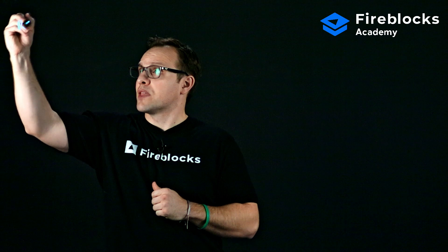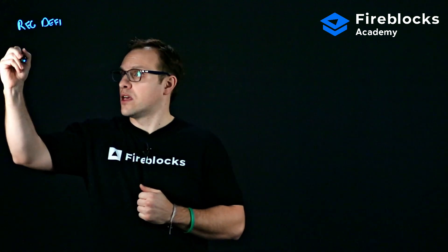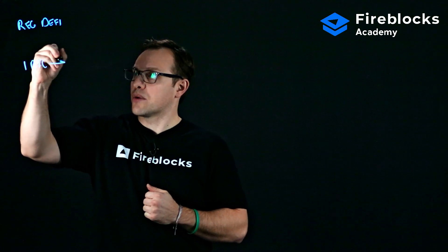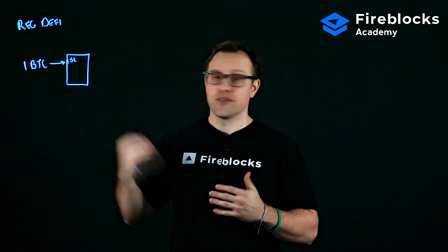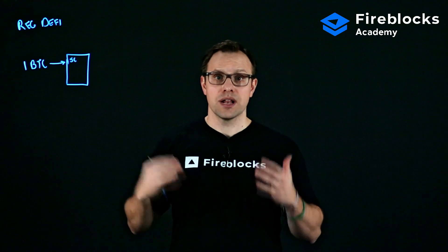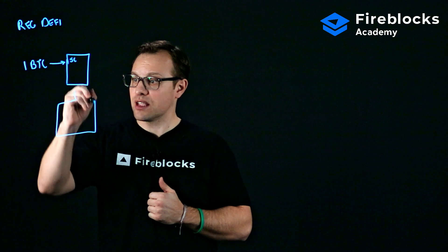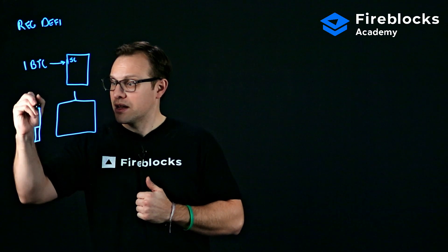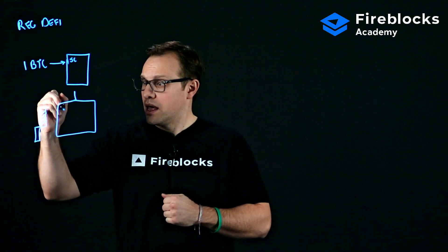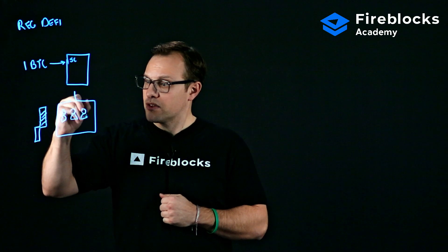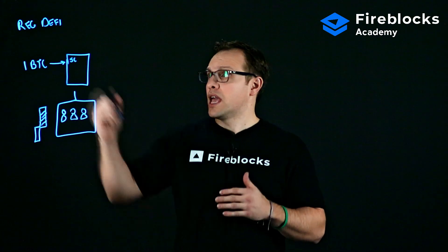For regular DeFi, let's say that I own one Bitcoin and I would like to earn some additional yield on that. I have my one Bitcoin and I want to go pledge this to a smart contract to earn that additional yield. The thing with regular DeFi is that it is essentially open to anyone and everyone — any individual or institution can participate. As I like to think of it, this is like a public parking lot with no security guard: the gate is up, come on in, park your car here.